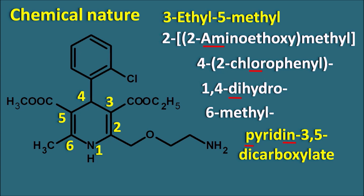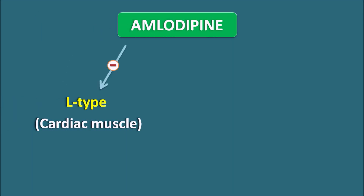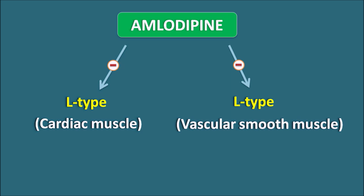Now let us see how this drug acts. Amlodipine is a calcium channel blocker. It can block the L-type calcium channels present on the cardiac muscle as well as the L-type calcium channels on the vascular smooth muscle. Dihydropyridines are more selective towards the vascular smooth muscle, so amlodipine shows more affinity towards L-type calcium channels on the vascular smooth muscle compared with the cardiac muscle. But still this drug can show action on both.